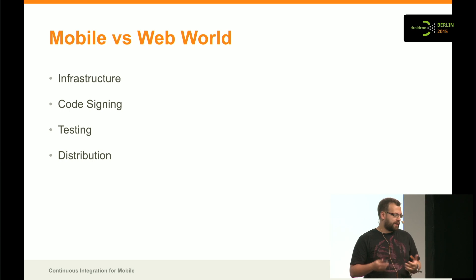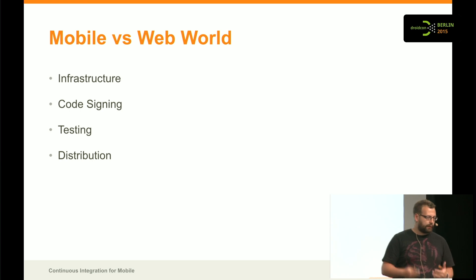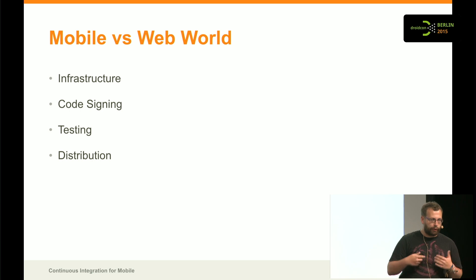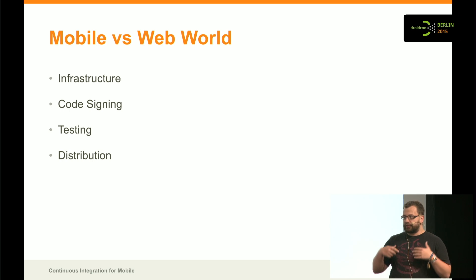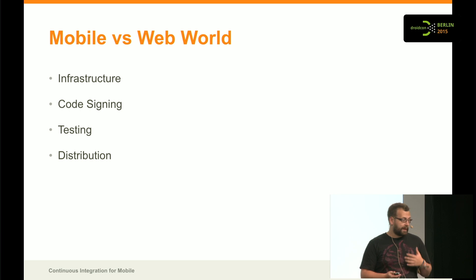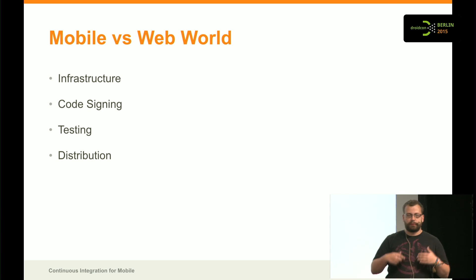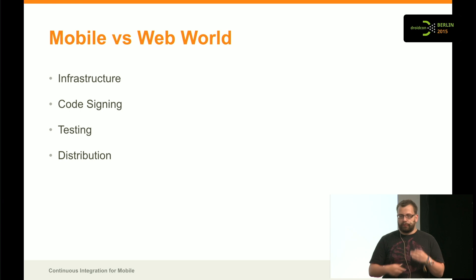Testing for mobile is maybe two or three years going bigger and bigger, but it's still a problem to do proper testing for mobile. Integrating this into a continuous integration pipeline is also always a bit complicated. And then there's the distribution — you have to provide APKs and make it possible for your testers and stakeholders to use them properly.